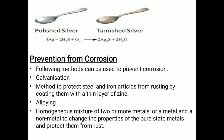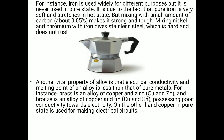The second method is alloying — a homogeneous mixture of two or more metals, or a metal and a non-metal, to change the property of the pure metal and protect it from rust. For example, pure iron is very soft, but mixing it with a small amount of carbon makes it strong and tough. Mixing nickel and chromium with iron gives stainless steel, which is hard and does not rust.